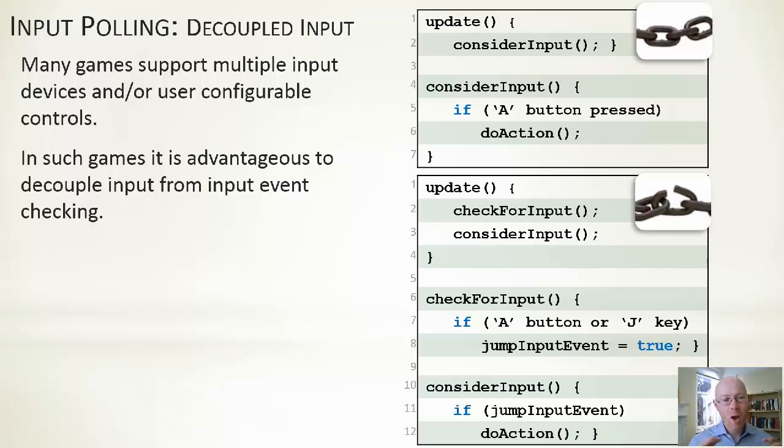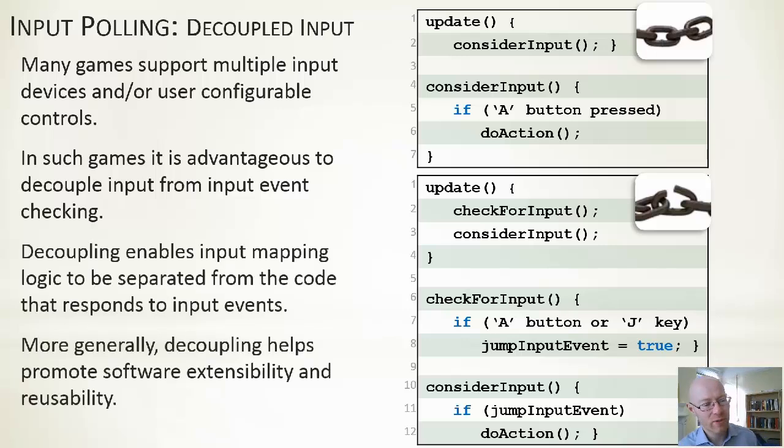If we detect that type of input, we do some action. This decouples the two. We're saying we have a certain class of input, and based on that class of input we take some action. But we're given the flexibility to change the input that will generate that particular thing being true or being detected. It enables input mapping to be separated from the code that responds to the events. That gives us programs more extensible and more reusable in the longer term.